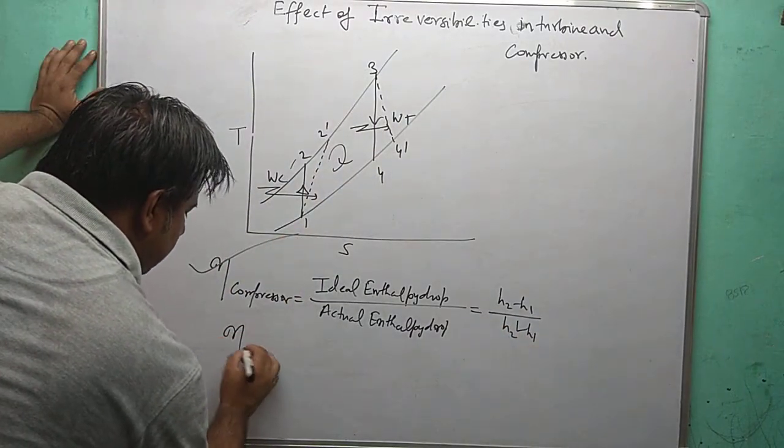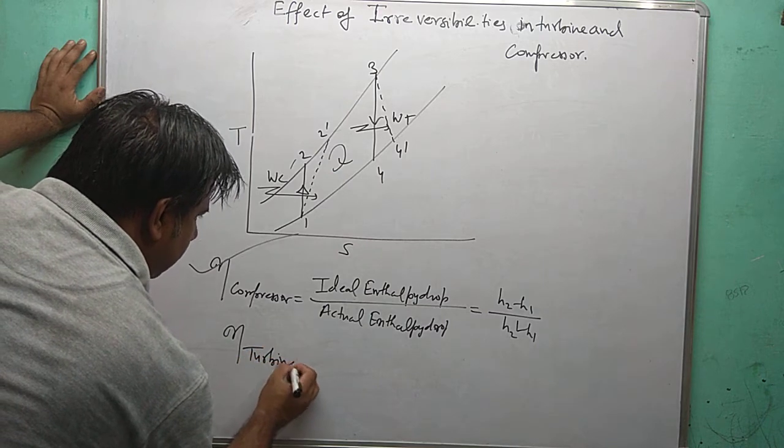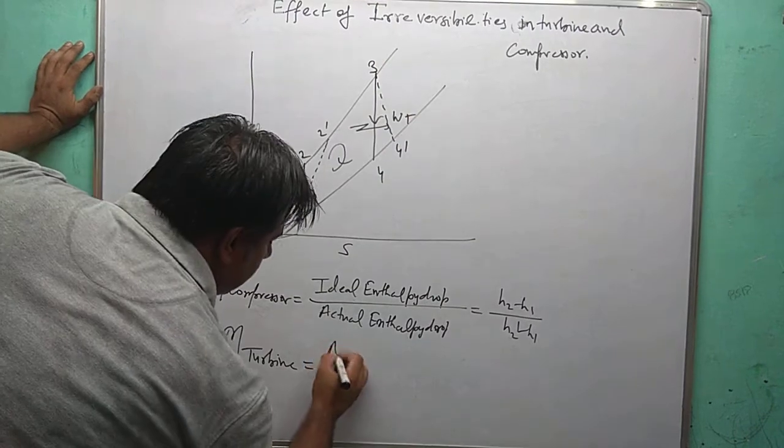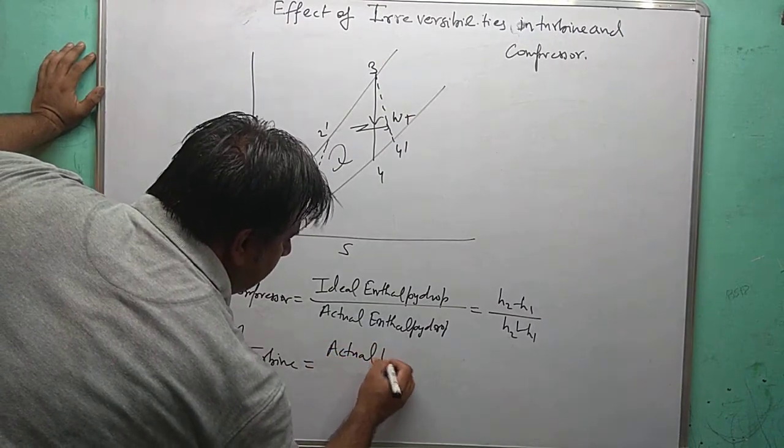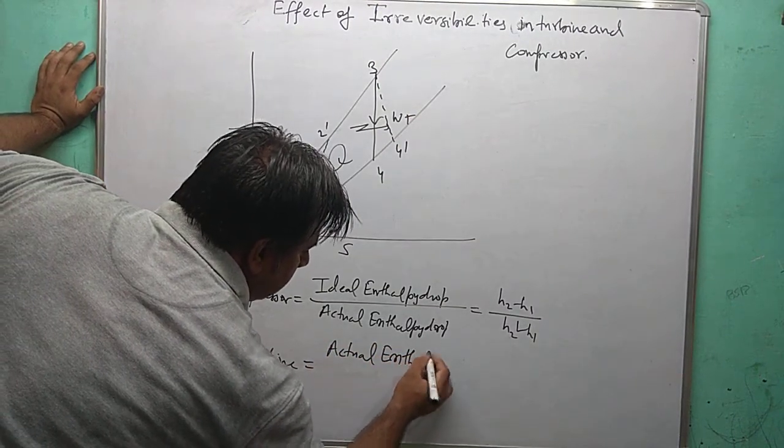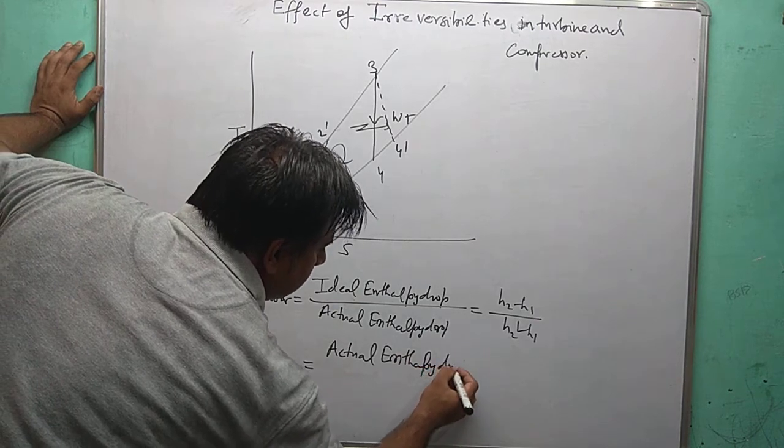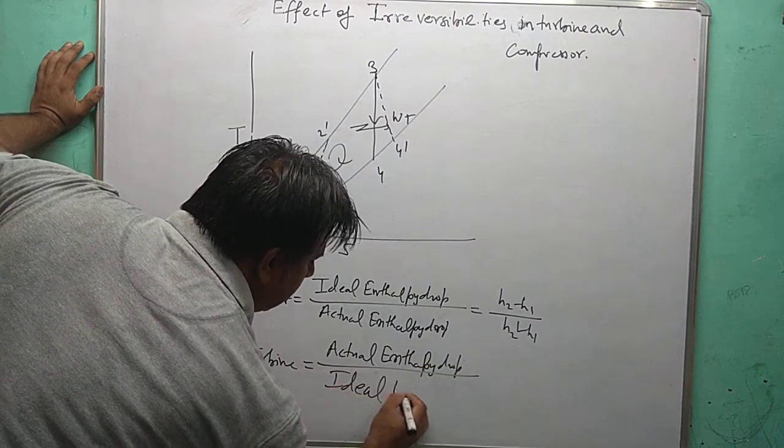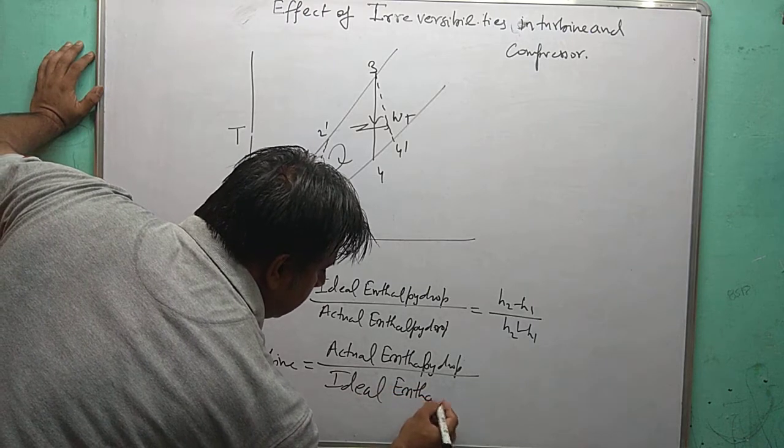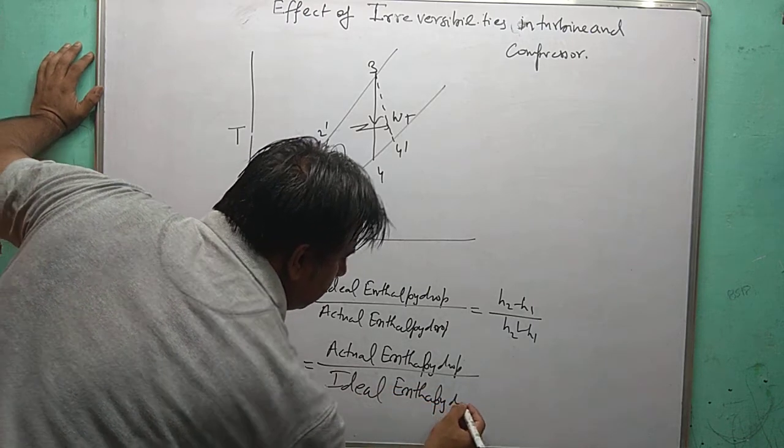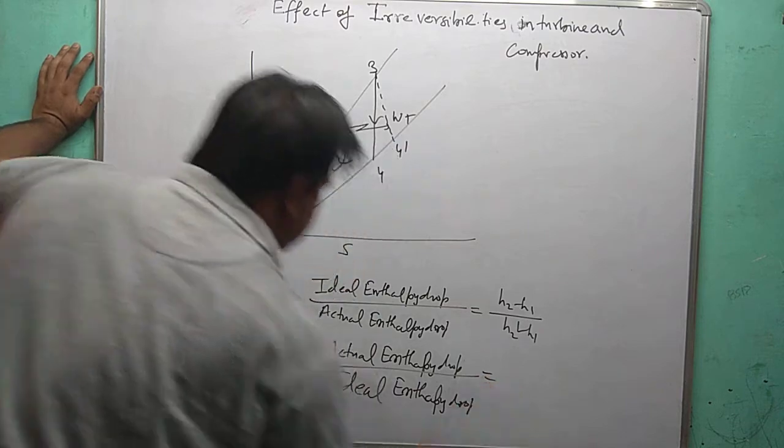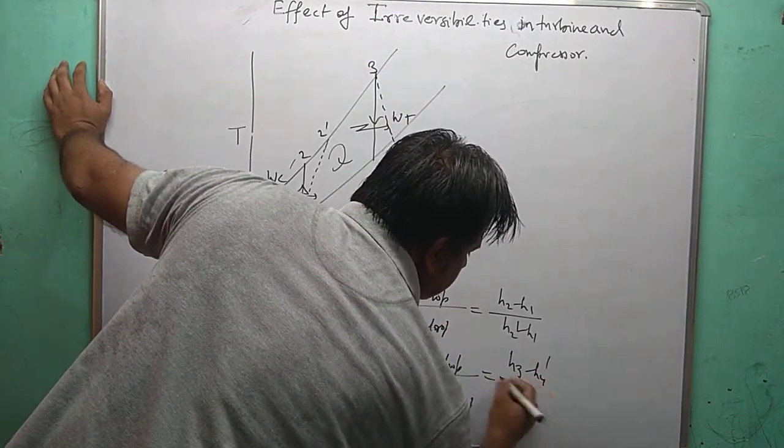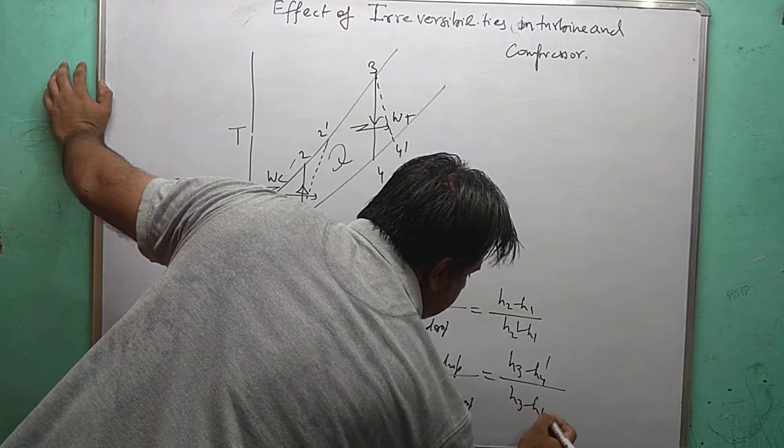Similarly for turbine, in turbine's case the minimum is actual. So actual enthalpy drop over ideal enthalpy drop. So actual is H3 minus H4 dash over H3 minus H4.